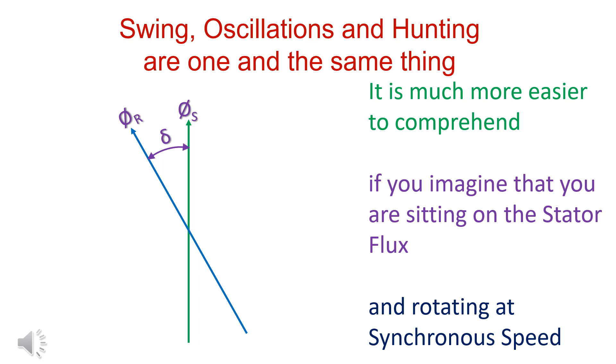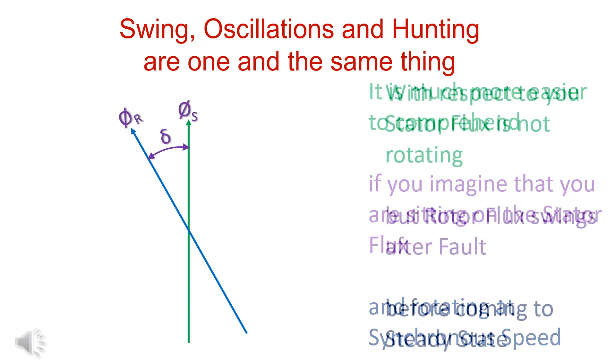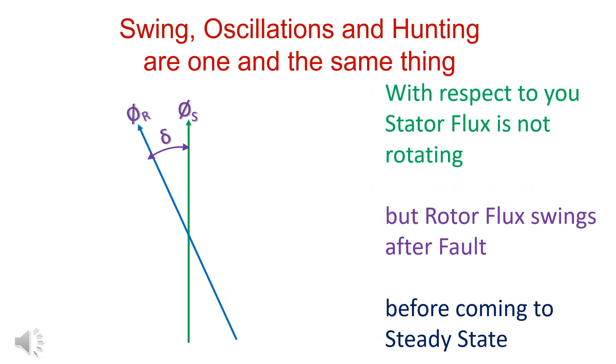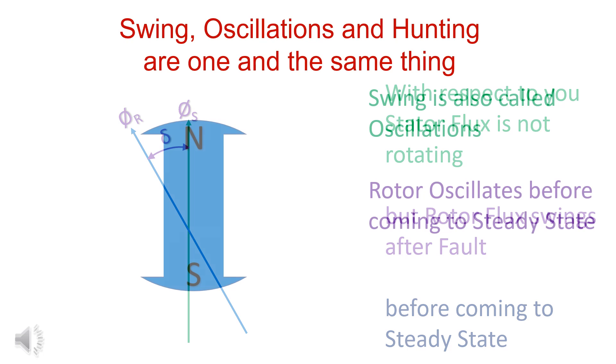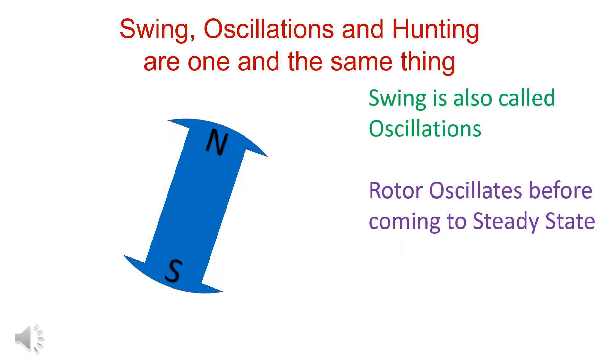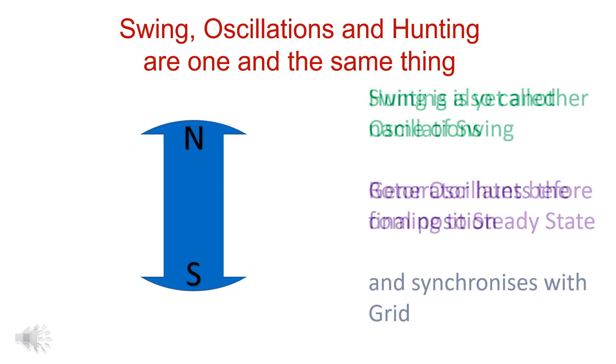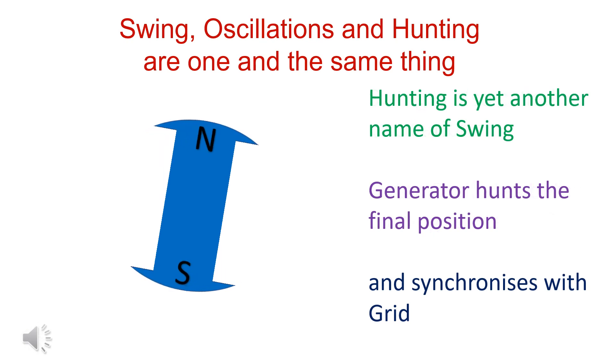Swing, oscillations and hunting are one and the same thing. The angular velocity of stator flux is constant. Only rotor or rotor flux swings relative to the stator flux. Rotor oscillates before coming to steady state and hunts the final position after oscillations.